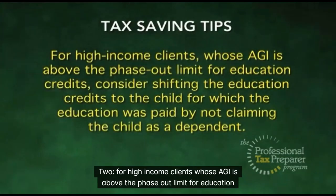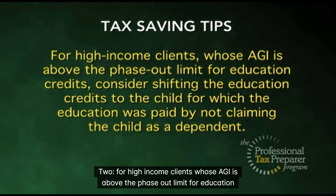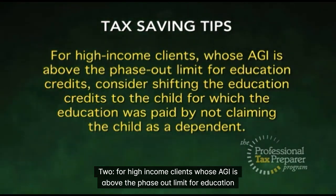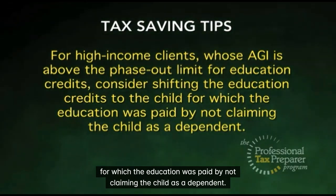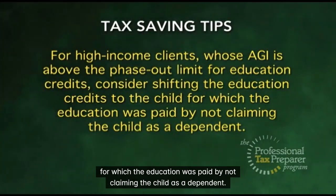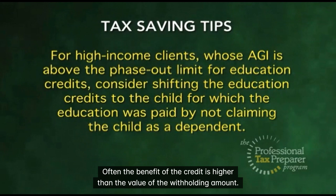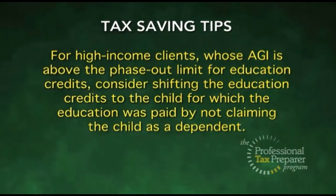Tip 2: For high-income clients whose AGI is above the phase-out limit for education credits, consider shifting the education credits to the child for which the education was paid by not claiming the child as a dependent. Often the benefit of the credit is higher than the value of the withholding amount.